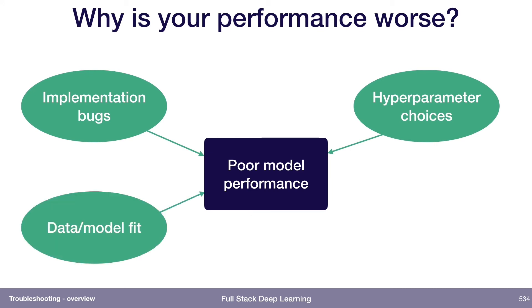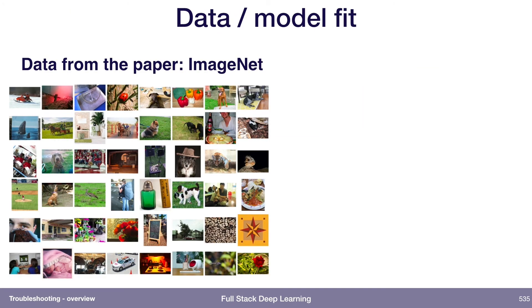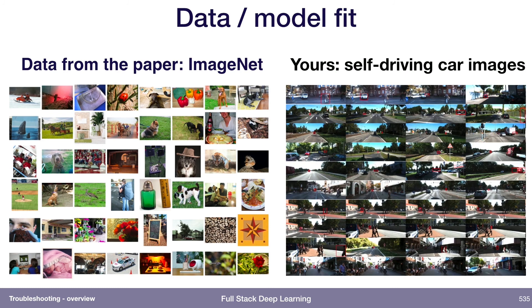Performance could also be worse just because of data-model fit. We were reproducing a paper trained on ImageNet, and this is what ImageNet data looks like. But if our data is self-driving car images, who's to say whether our worse performance is because of a bug or whether it's just because our data itself is harder?